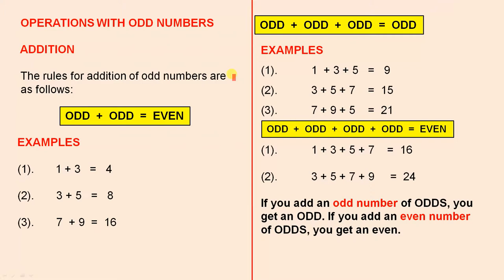We'll start with addition. The rules for addition of odd numbers are as follows. If you have an odd number and you add another odd number, you get an even number. Here are three perfect examples — pause the video if you like and have a look at your leisure.